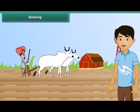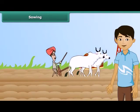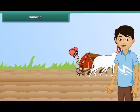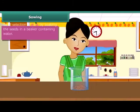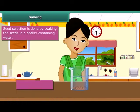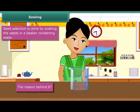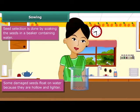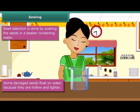Once plowing is done, the next step is sowing. Before sowing, farmers select good quality seeds to get high yields. Have you ever noticed your mother putting some grains in a vessel and pouring some water into it? Some seeds start to float. Some damaged seeds float on water because they are hollow and hence lighter. This is a good method for separating good, healthy seeds from the damaged ones.